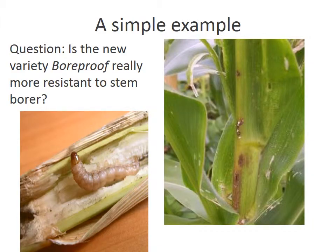So what are these key principles? I will try to illustrate them with a very simple example. This is not a real example, but it is realistic. I have a problem of stem borer destroying maize in fields. A breeder tells me he has a new variety called bore-proof, which is less susceptible than the one currently being grown, called M512.